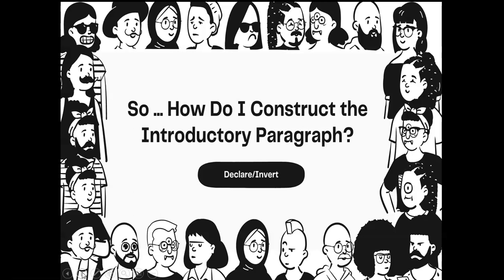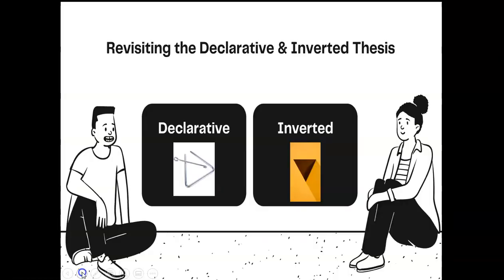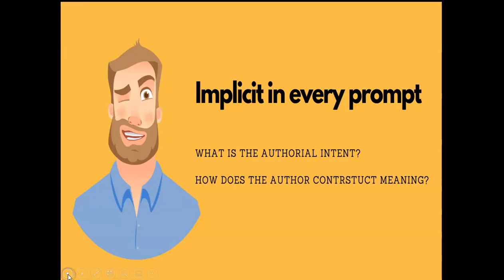The immediate question is: how do I construct the introductory paragraph? As always, you have two choices — you can declare or you can invert. For my students, I always tell them when writing literary analysis it's best to invert the thesis, because the prompt is really asking you two implicit questions: what is the authorial intent, and how does the author construct meaning? To get a good, complex thesis statement you've got to answer both of those questions.